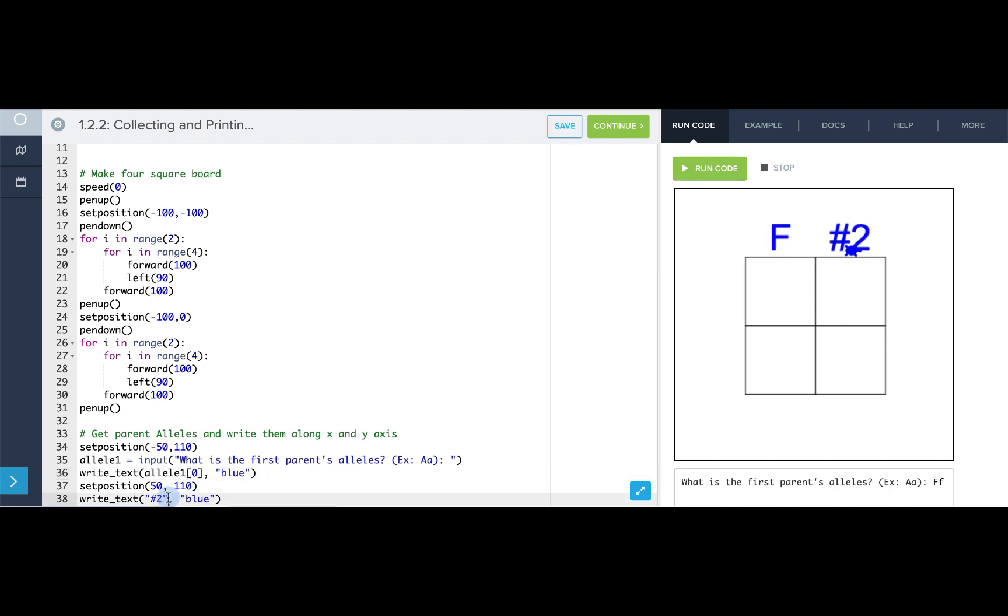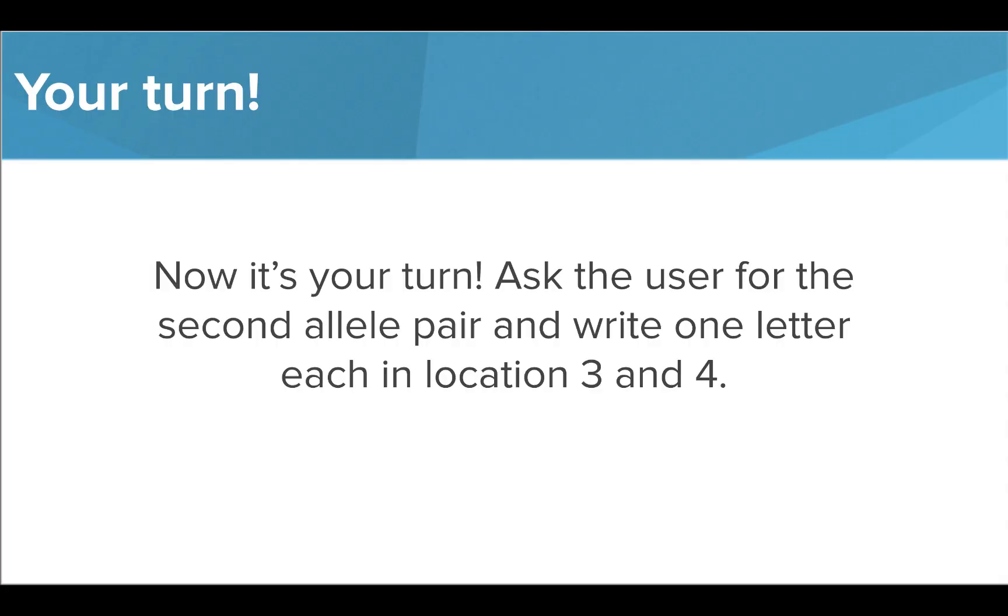In place of number two, I want to call allele one and get the value found at the first index. Let's see how that looks. Perfect. Now it's your turn.